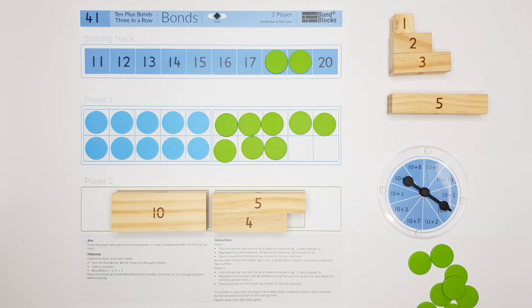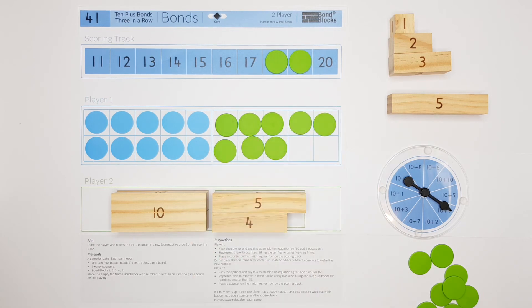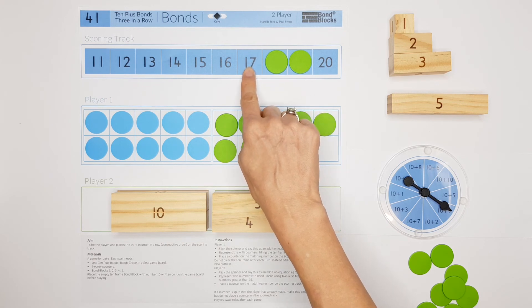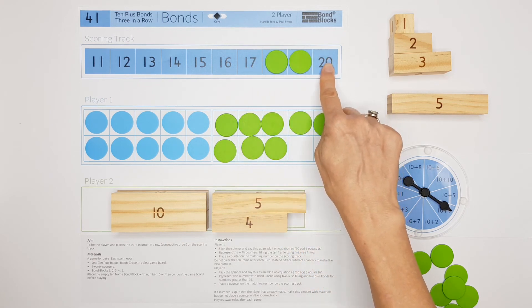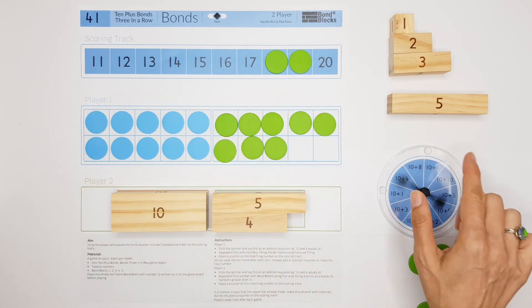The aim of the game is to be the player who places the third counter in a row of consecutive counters. So if the next player spins either 17 or 20, they win.